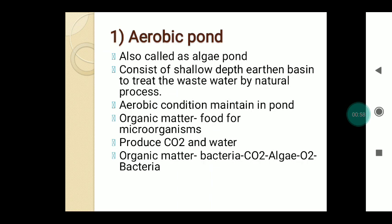First is the aerobic pond, also called the algae pond. Because of the algae, it produces the photosynthesis process, which produces oxygen. This oxygen is utilized by bacteria for the generation of new bacteria, producing carbon dioxide. This carbon dioxide is again used by algae in the photosynthesis process, releasing oxygen into the wastewater. This process is continuous, maintaining aerobic conditions.